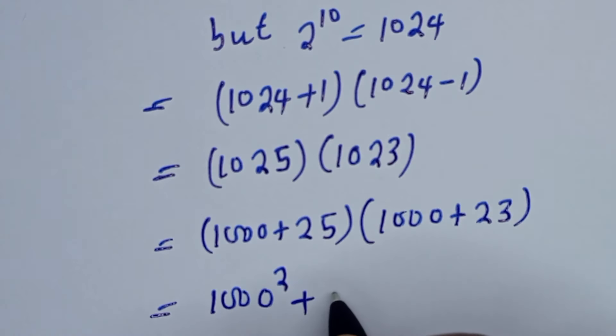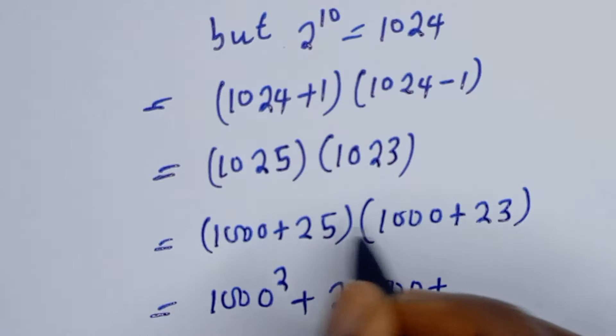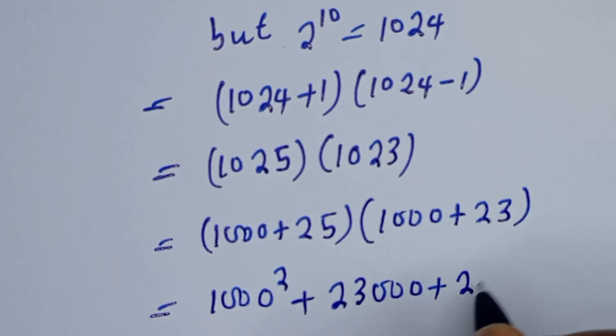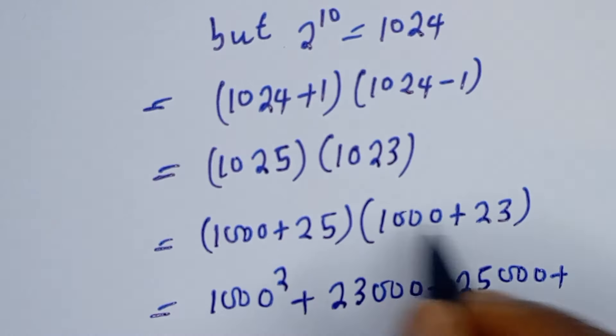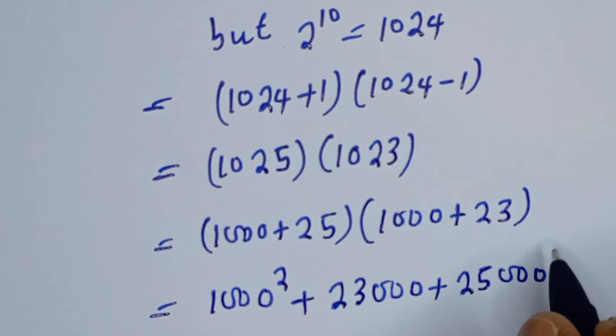Plus 1000 times 23, this is 23,000. Plus 25 times 1000, this is 25,000. Plus 25 times 23, this is 575.